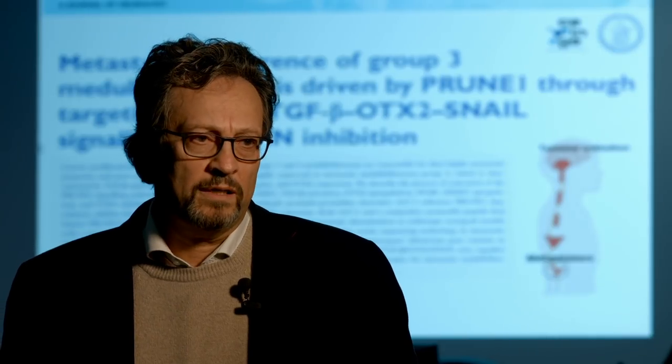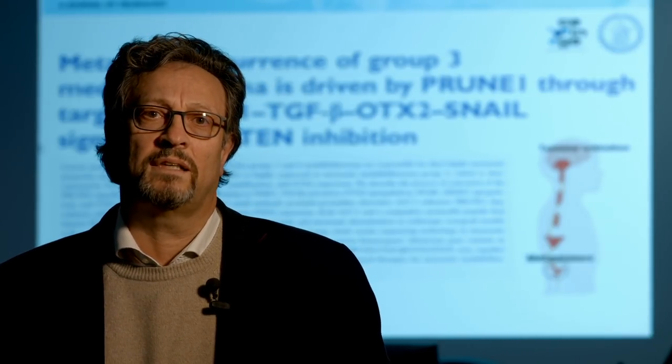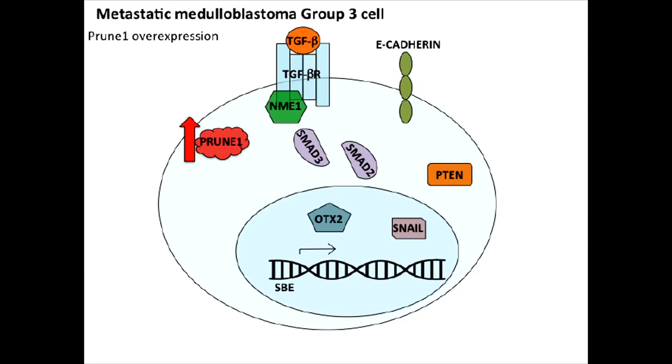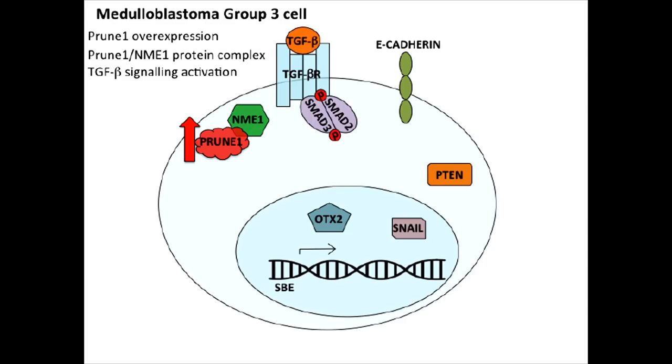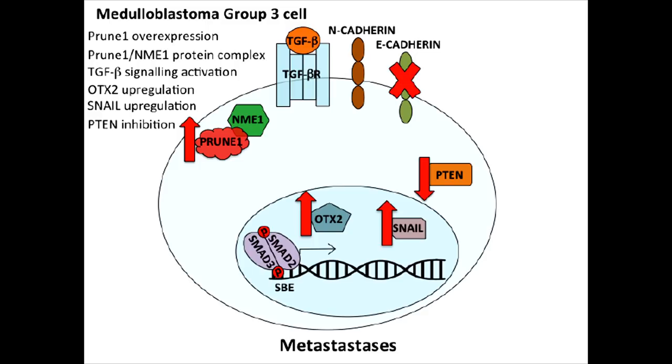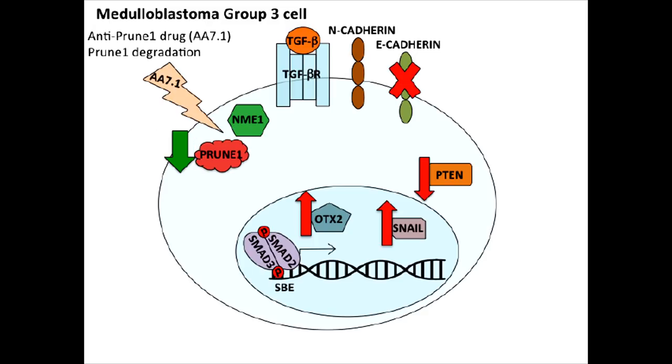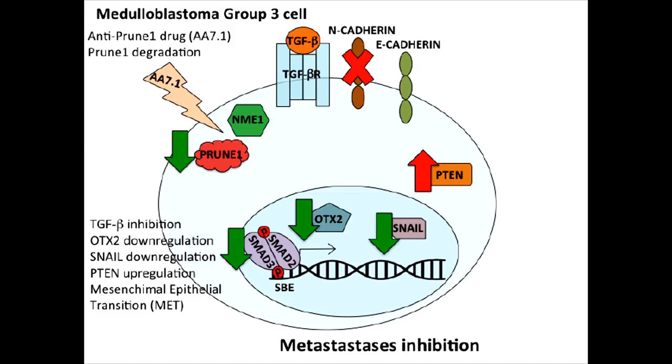In this manuscript we define how the metastasis is occurring in group 3 medulloblastoma by dissecting several signal pathways mainly involved with the TGF beta regulation and OTX2 overexpression and down regulation of the onco-suppressor prune 1.